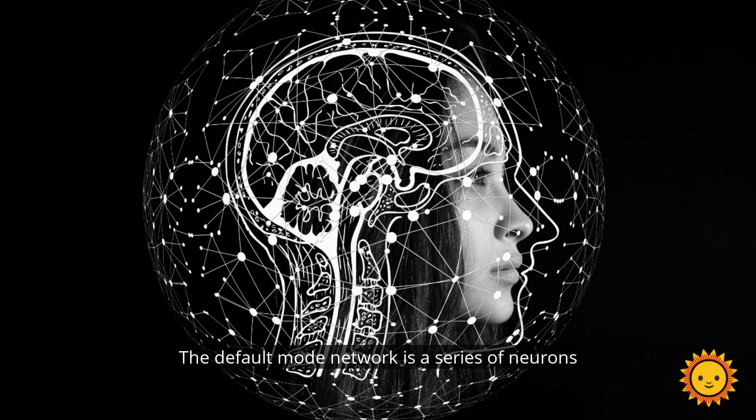The default mode network is a series of neurons in your brain that has automated certain things. And the reason why we have a default mode network is because we need it. When you learn how to do things on default, you can do them without thinking. Very important for you so that you're not taxing your brain all day. When you learn to write with your right hand or your left hand, it becomes part of the default mode network.